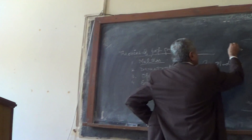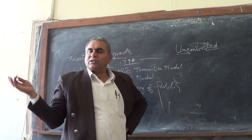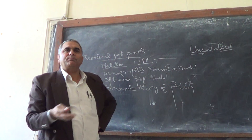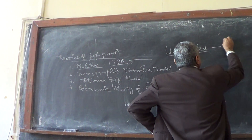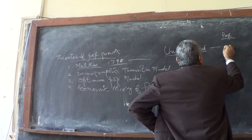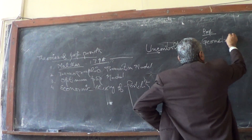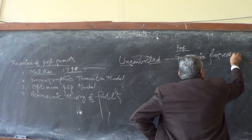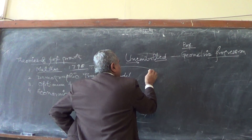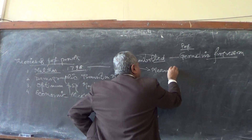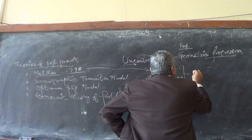So Malthus said, if population is left uncontrolled — because mass production was starting to take place — when population is uncontrolled, the population may increase in geometric progression. At the same time, means of subsistence will increase only in arithmetic progression.